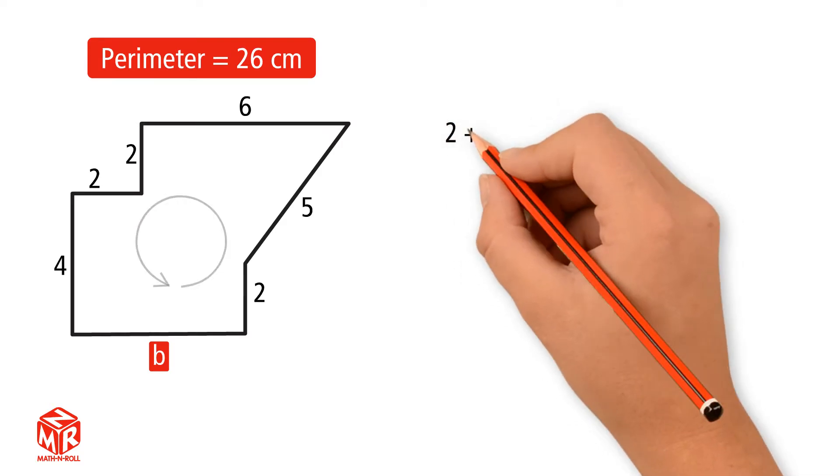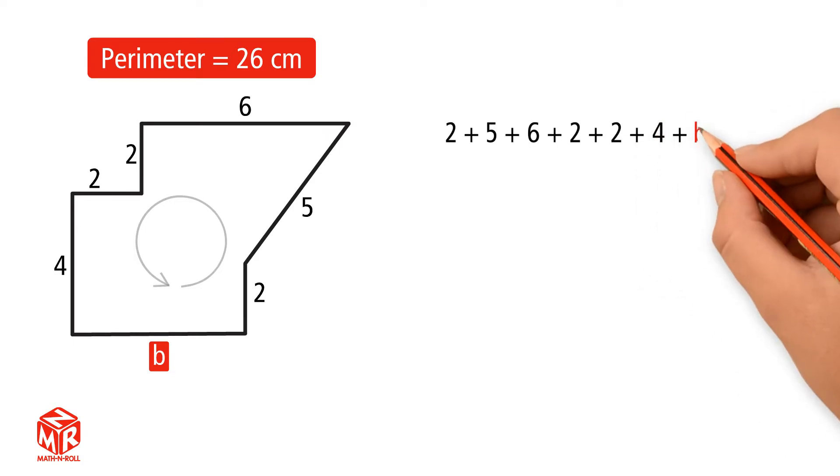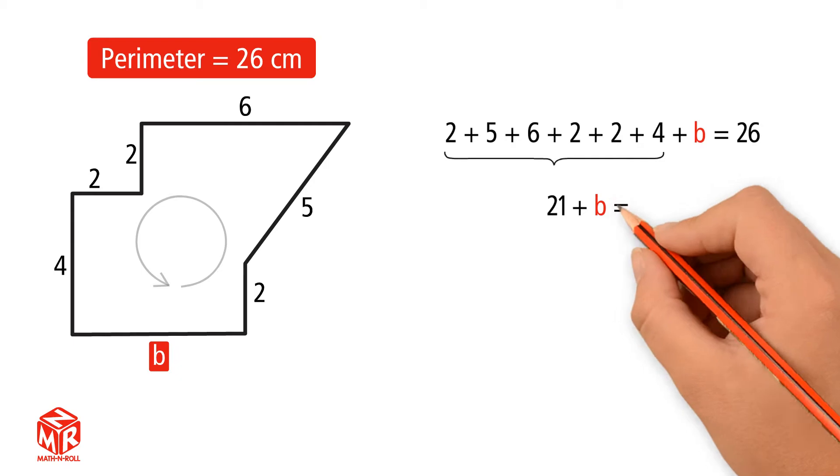2 plus 5 plus 6 plus 2 plus 2 plus 4 plus B equals 26. Add the lengths of the sides that you know. 21 plus B equals 26.